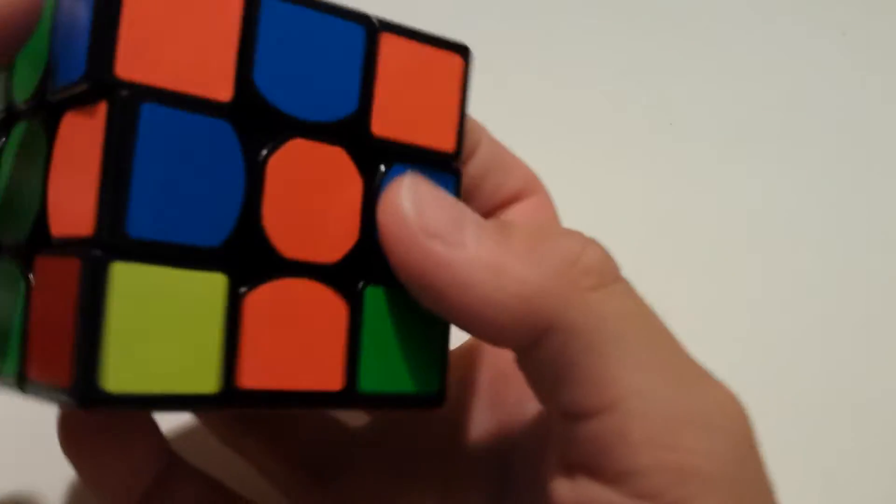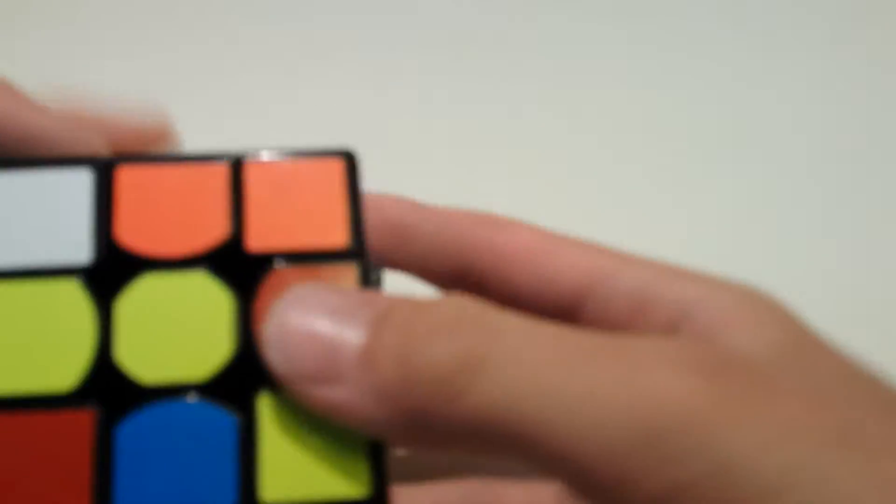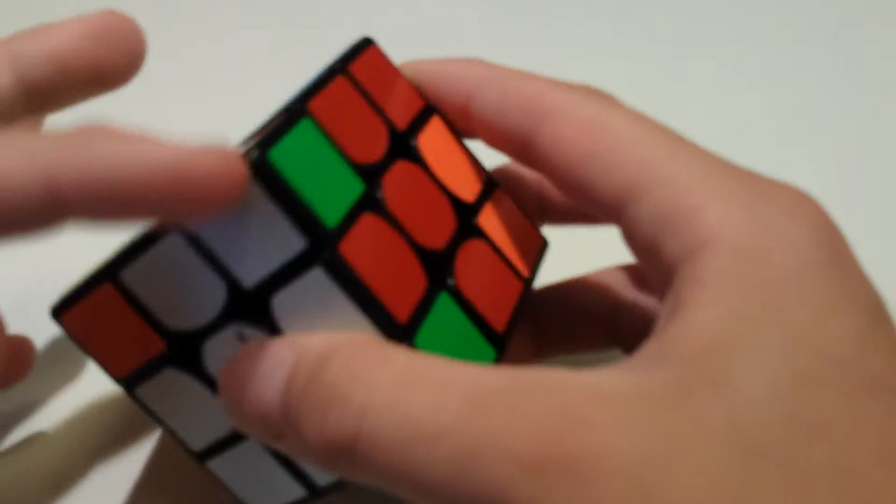So you can see this one right here. We can do this one. Just like this. Now this corner is wrong and this edge is in the right spot. And we can also do this one in this corner. And now this one is in the right spot, but this corner isn't.